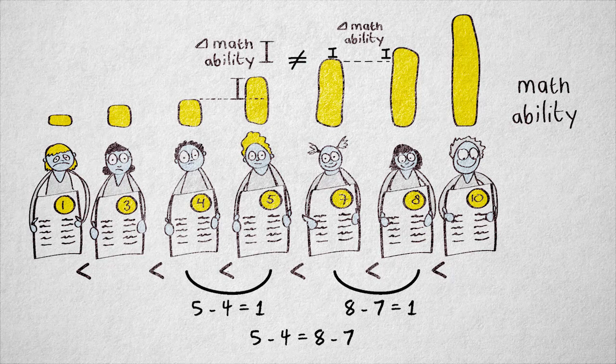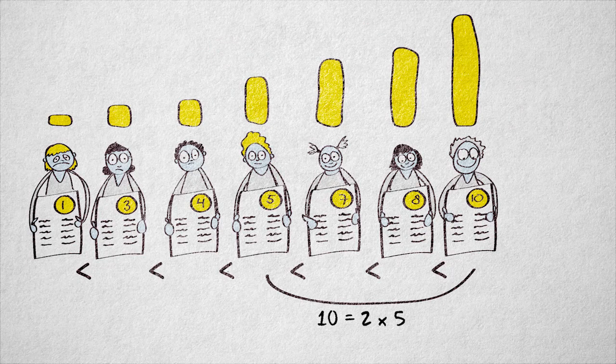And the same goes for ratios. Someone with a score of 10 doesn't have twice the mental math ability of someone with a score of 5.